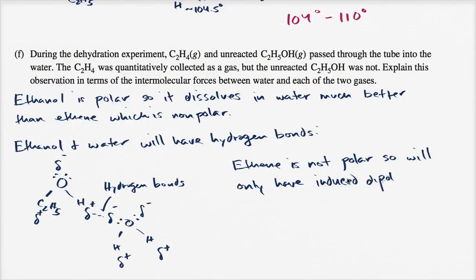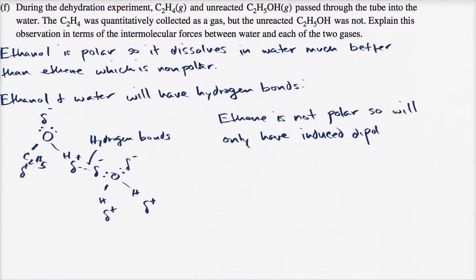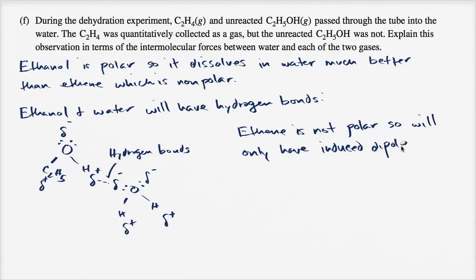Induced dipole, or I could say dipole interactions, because the water is polar. And even though ethene is a symmetric molecule, it has that double bond, it has no net polarity. There are parts of the ethene molecule that are going to be a little bit more negative than others. In particular, when you look at the carbons over here, they're a little bit more electronegative than the hydrogens. So ethene is not polar, so we'll only have induced dipole, or just dipole interactions with polar water.